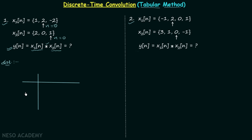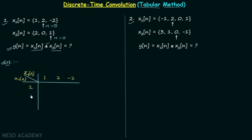Since we are using the tabular method, there must be a table. We write the values of signal x1n horizontally: 1, 2, minus 2. We write the values of signal x2n vertically: 2, 0, 1.